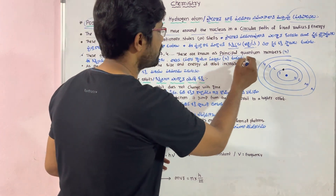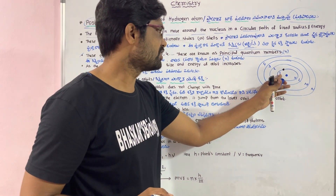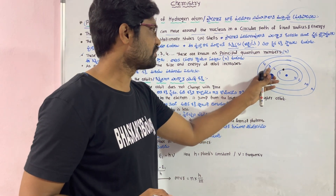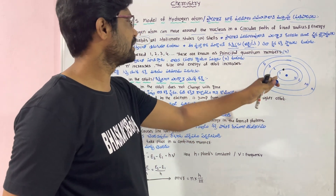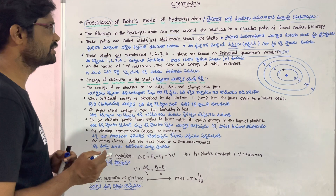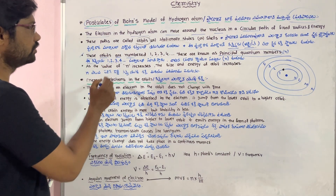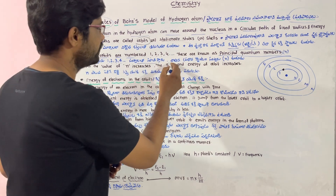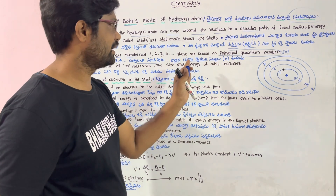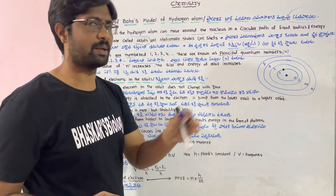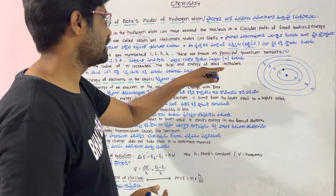These are known as principal quantum numbers. n is equal to 1, n is equal to 2, n is equal to 3, and n is equal to 4. Each orbit is assigned a principal quantum number. These are the types of quantum numbers — specifically the principal quantum numbers.